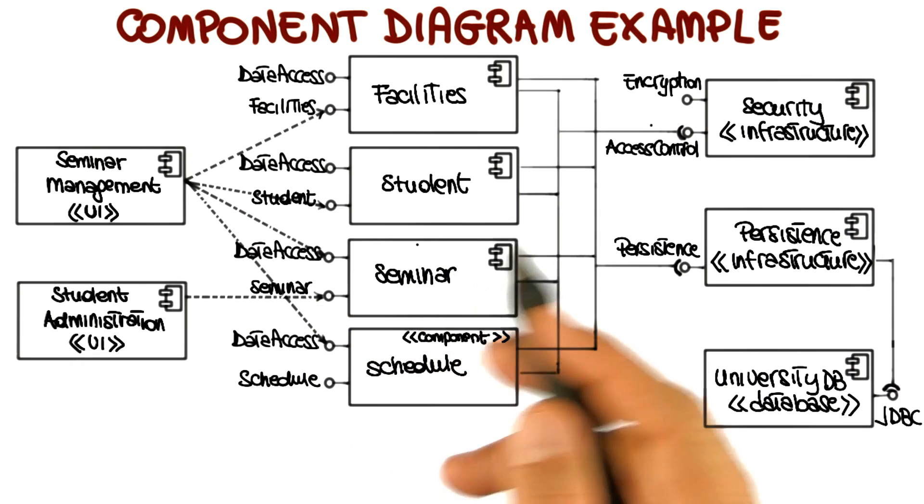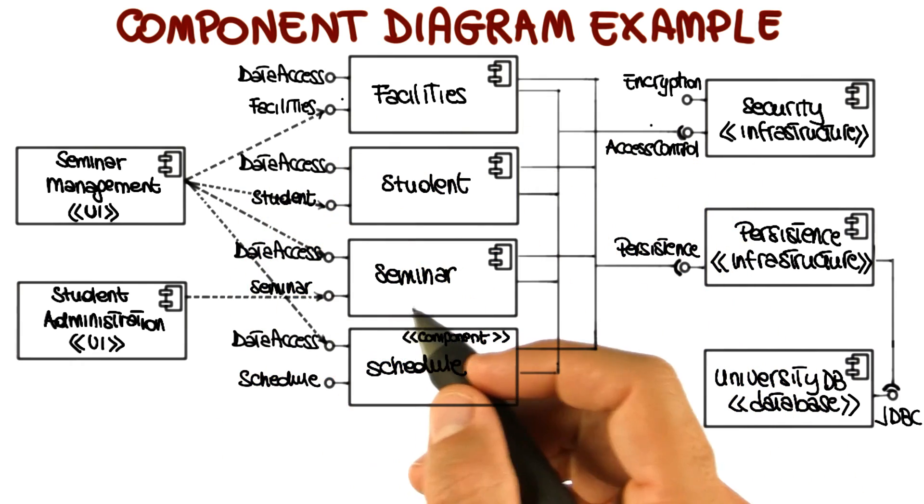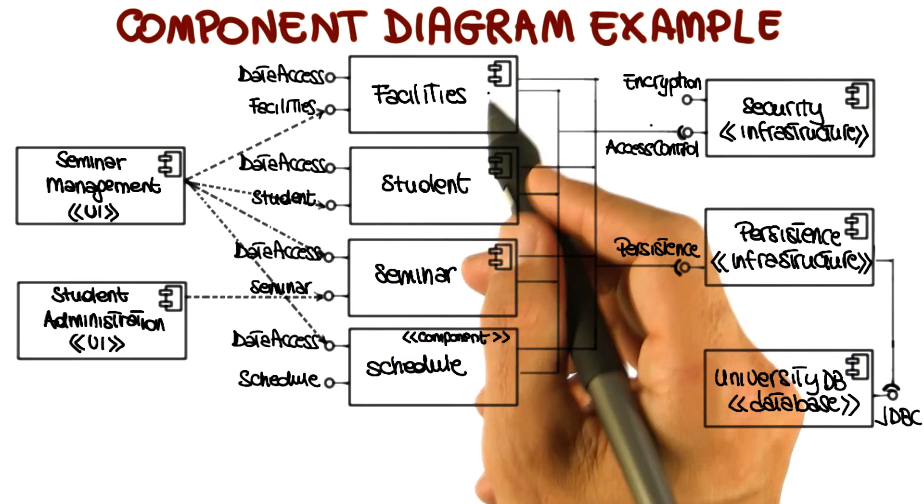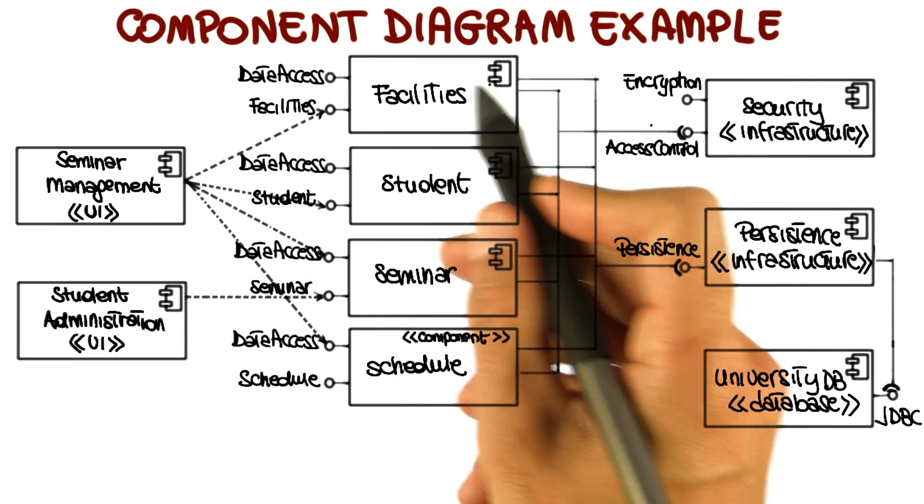And as far as edges are concerned, I'm representing two kinds of edges. The first kind are dashed edges, which were part of the original UML definition, and they indicate use. So an edge, for example, between this component and this component indicates that the seminar management uses the facilities component.